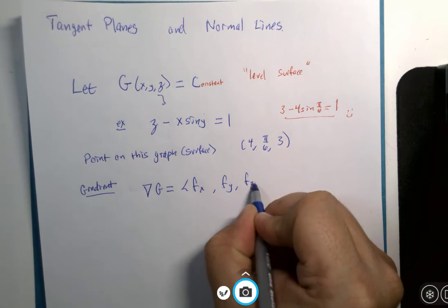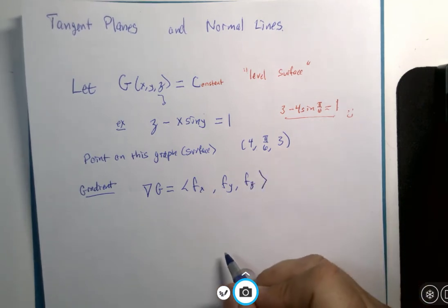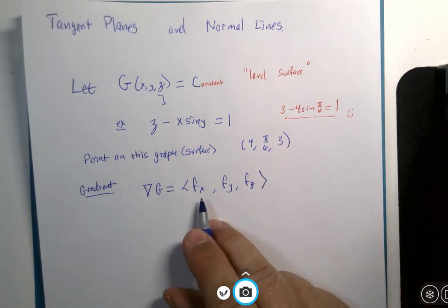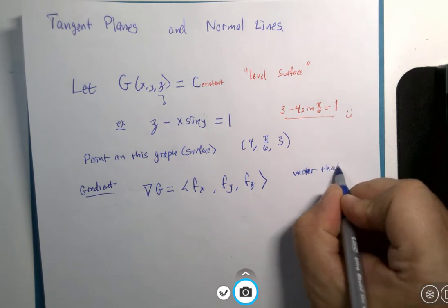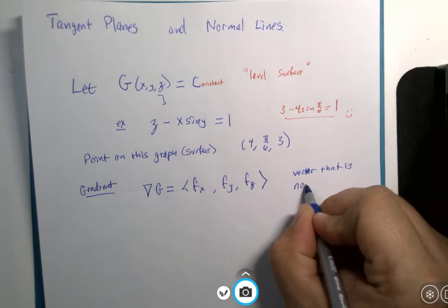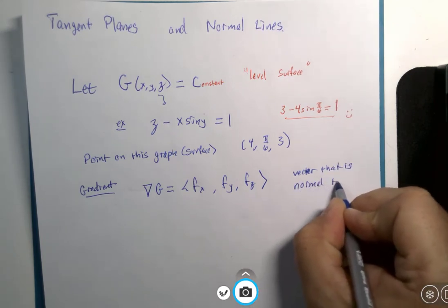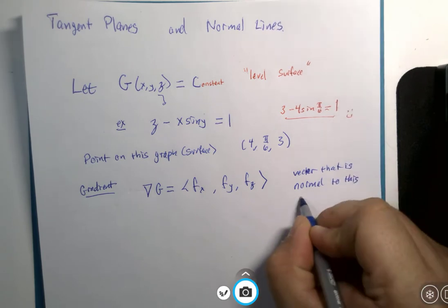that would be equal to some vector that is normal to this surface.